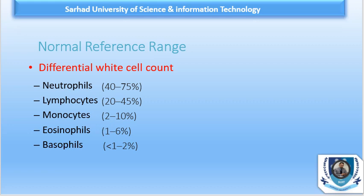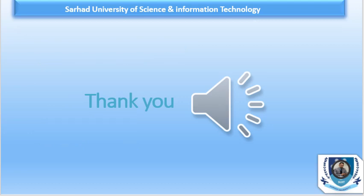Manual DLC is more significant in infectious conditions and important in certain types of leukemias and other diseases. To summarize, we covered what differential leukocyte count is, how to perform manual DLC, how many cells are required (100 cells), and the normal values — such as neutrophils 40 to 75%, monocytes 2 to 10%, and so on. Thank you very much; we will see you in the next video.